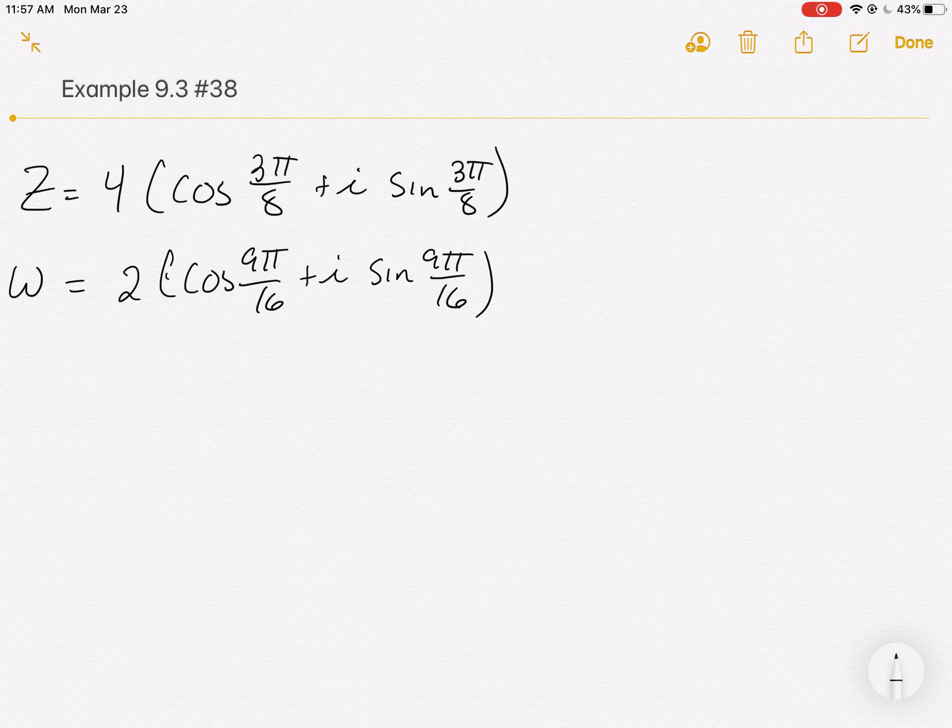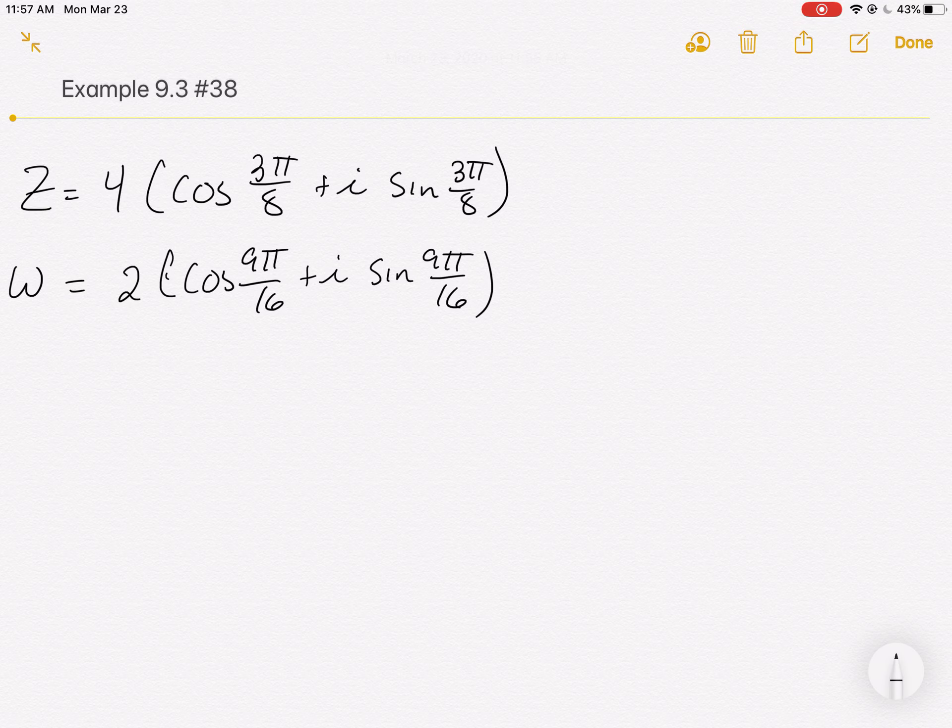OK, so as we move towards the end of section 9.3, it's reminding us of a bunch of things that happened in our previous trig class. So they're bringing up the polar form of a complex number. And one of the advantages of having a polar form of a complex number is demonstrated here in 9.3, number 38.